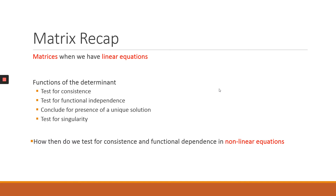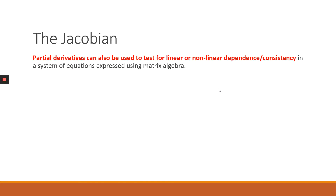The answer basically lies in the use of the Jacobian, which works with partial derivatives. With the Jacobian, we are still using matrix algebra, but in this regard we also apply partial derivatives in trying to ascertain whether there is consistency and linear dependence in our function.